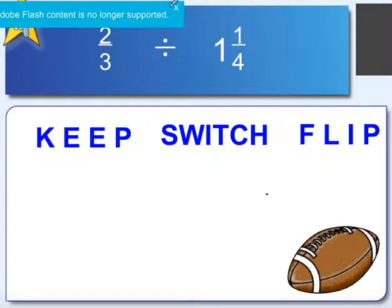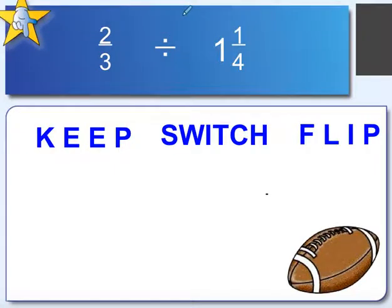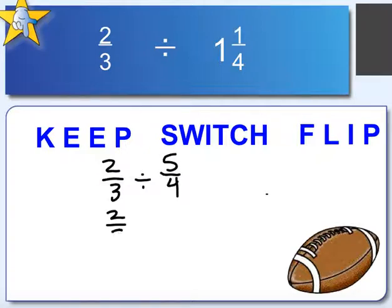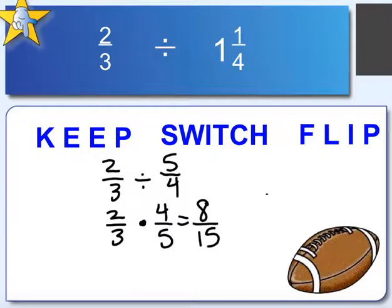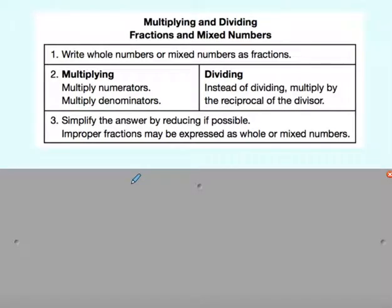For mixed numbers with division, same idea. We have 2 thirds divided by 1 and 1 fourth. We put it into an improper fraction — 5 over 4 — then keep 2 thirds, switch to multiplication, and flip to get 4 fifths. So we get 8 fifteenths as the answer. Just change it into an improper fraction first.